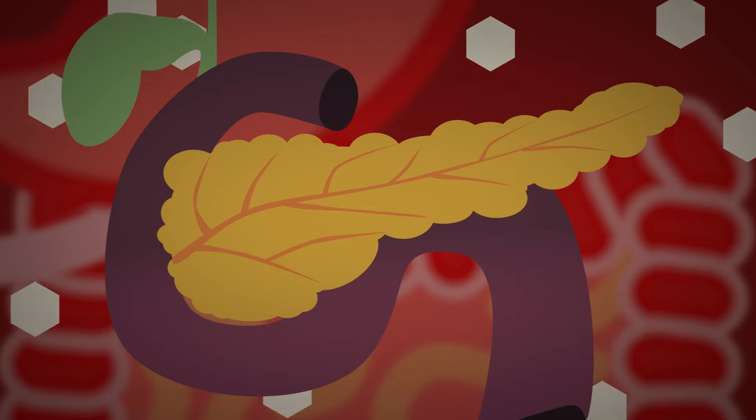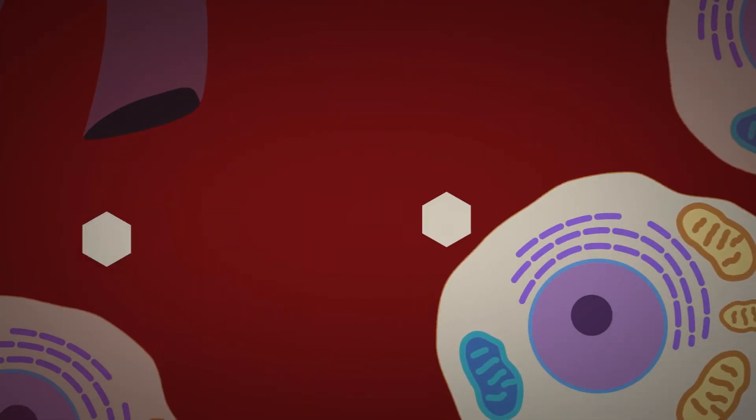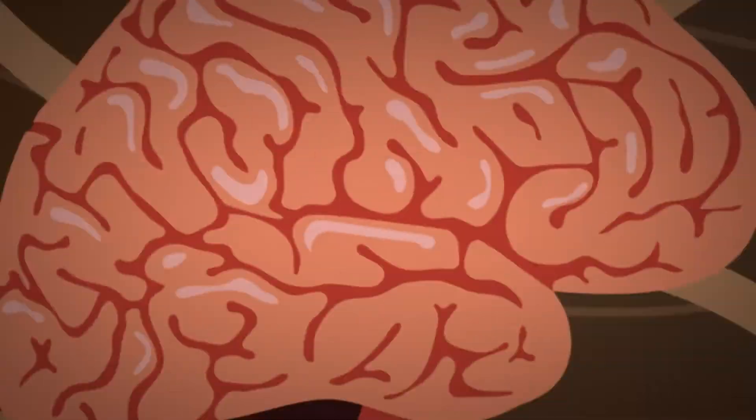Your pancreas then releases insulin that moves the glucose from your bloodstream to your cells. That creates the energy boost we call a sugar rush.